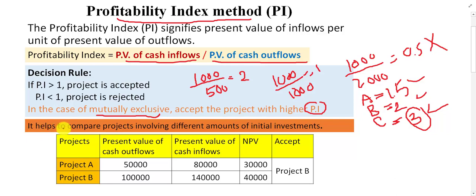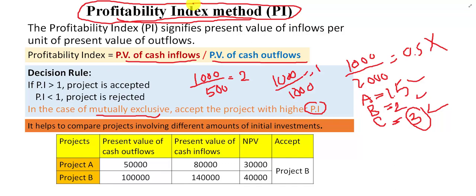One more point regarding the Profitability Index: it helps to compare projects involving different amounts of initial investment. The PI method was basically developed due to the limitation of the Net Present Value method. NPV cannot compare two different projects which have different amounts of investment. If two projects have different amounts of outflow, NPV cannot be applied.